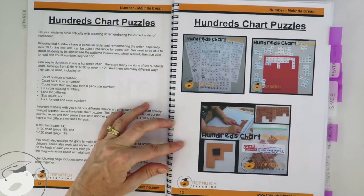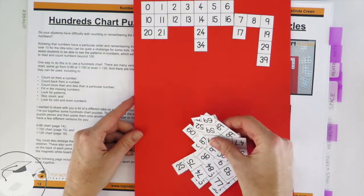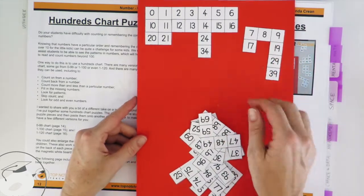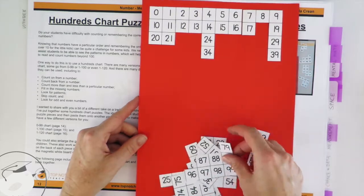You can do this in the standard way where you just print the sheet, cut all the bits out, and then the children are required to put it back in order and stick it down as they go.